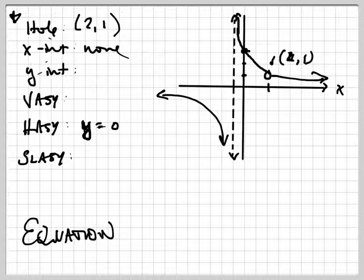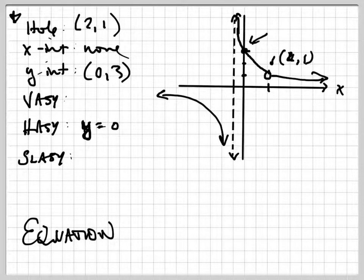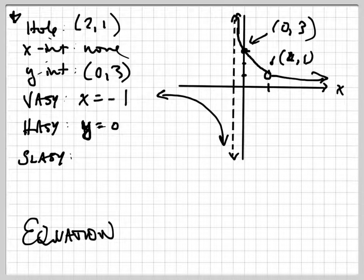The vertical asymptote, let's do the y-intercept. The y-intercept is 0 comma 3, that point right there. And the vertical asymptote is x equals negative 1. And there is no slant asymptote.